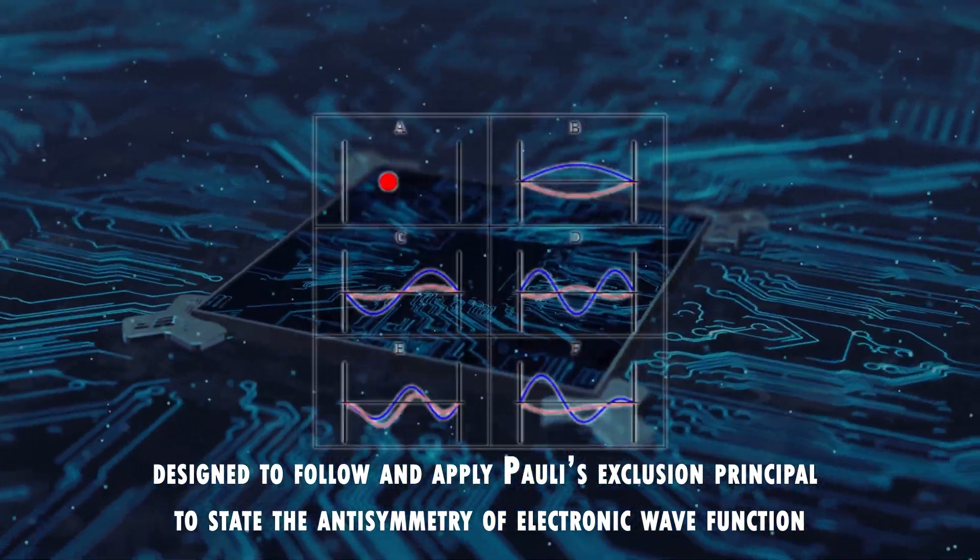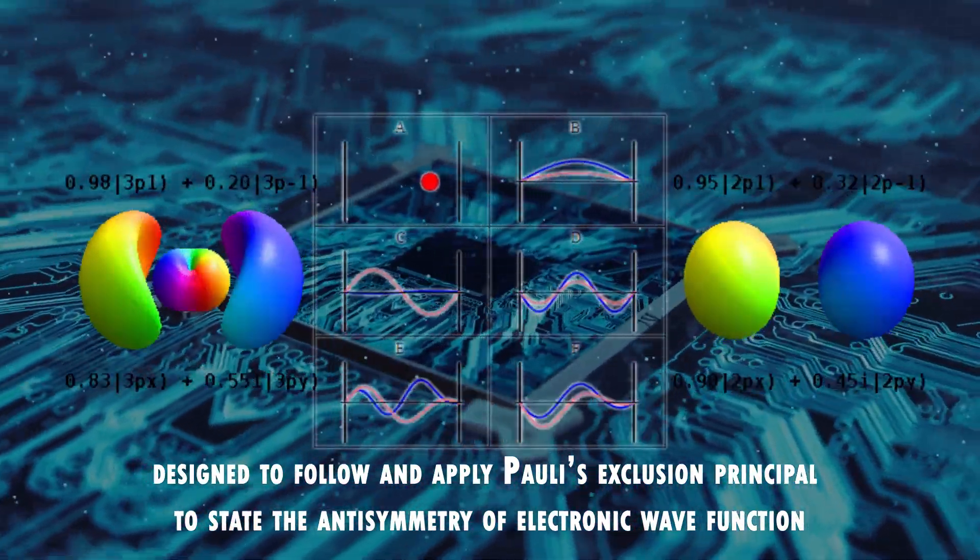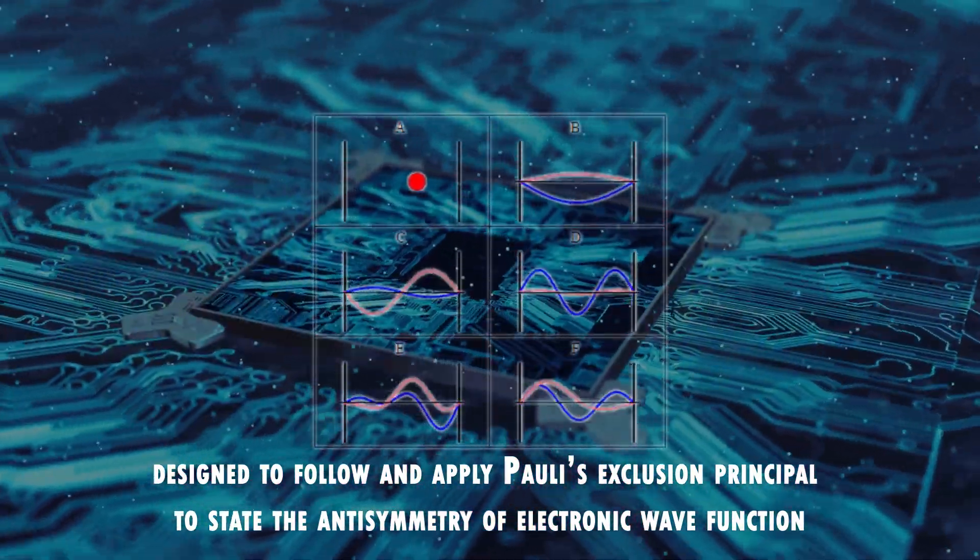PauliNet, the name given to this system, is designed to use and apply Pauli's exclusion principle to define the anti-symmetry of electronic wave function.